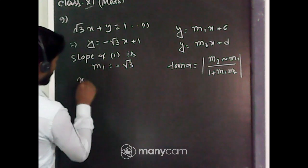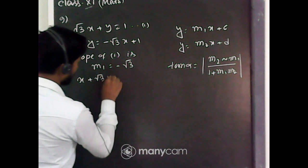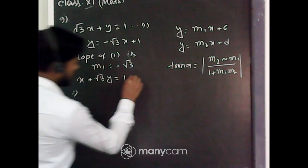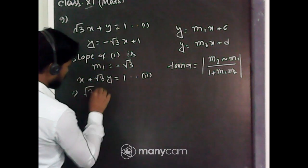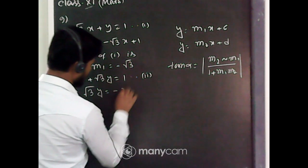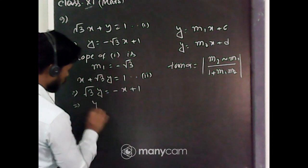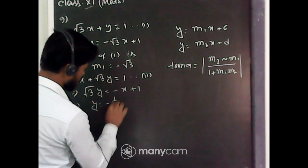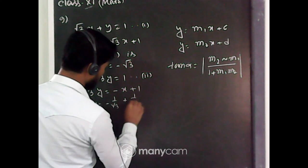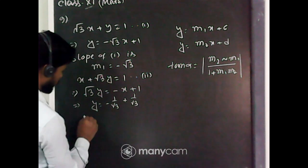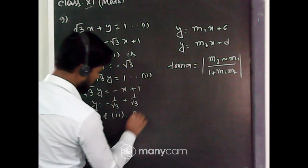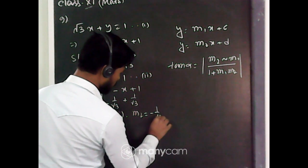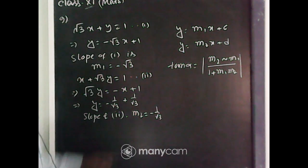The second equation is x + √3·y = 1, which gives √3·y = -x + 1, so y = (-1/√3)x + 1/√3. Therefore slope m₂ = -1/√3.